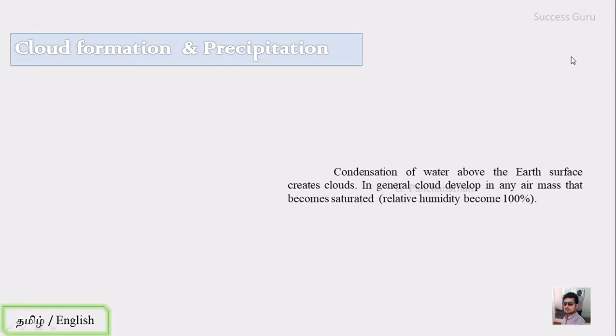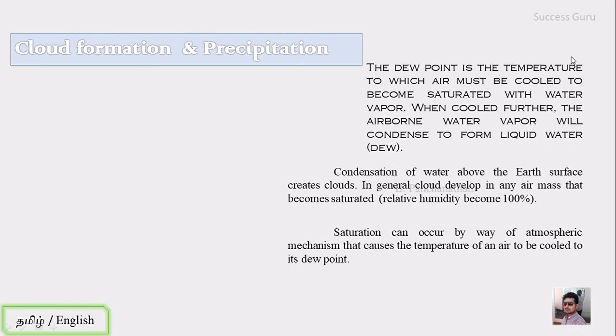Welcome to my channel Success Guru. I'm Panchanatham. Let's get into the heading: cloud formation and precipitation. The condensation of water above the earth's surface creates clouds. In general, clouds develop in any air mass that becomes saturated, meaning the relative humidity reaches 100%. Saturation can occur through atmospheric mechanisms that cause the temperature of air to cool to its dew point, which is the temperature at which air must be cooled to become saturated with water vapor. When cooled further, airborne water vapor condenses to form liquid water called dew. This can be done by many processes.